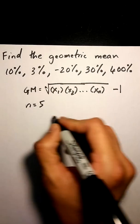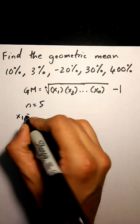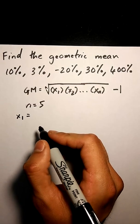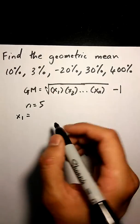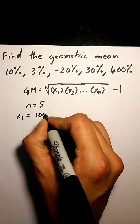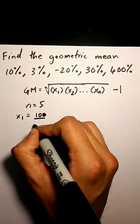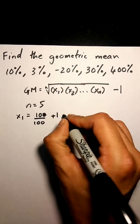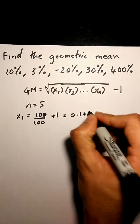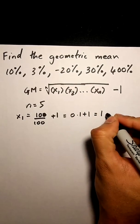Okay, so when I'm trying to find x1, basically look at my first percentage, that's 10%. I'm going to convert that to a ratio. So I'm going to divide 10 by 100, then I'm always going to add 1. So this is 0.1 plus 1, it's just 1.1.